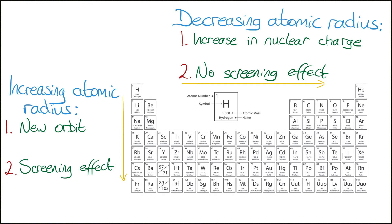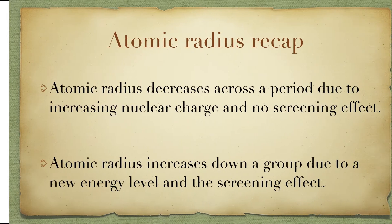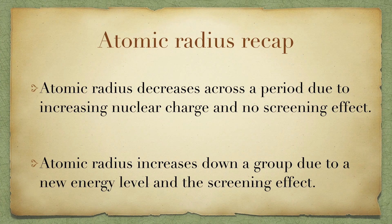The Bohr model visually shows how the atomic radius increases going down the group. You have to be able to learn this off.